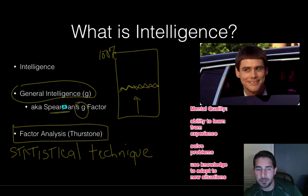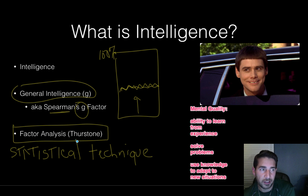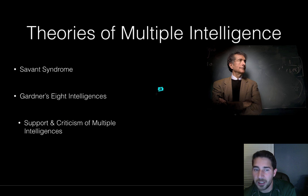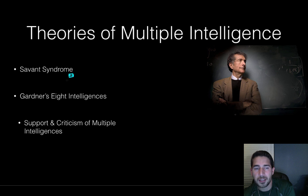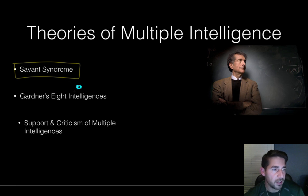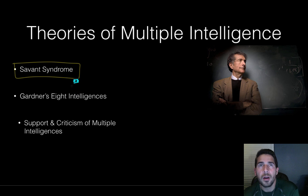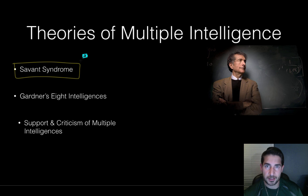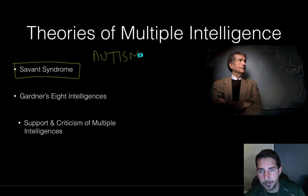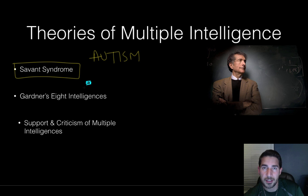There are a few names to keep in mind — Spearman, Thurstone, and Gardner is coming right up. Here's our man Gardner — he's the multiple intelligences guy. A criticism of Spearman is this idea of savant syndrome, where somebody is poor in many areas but really good in another. If you've seen the movie Rain Man, Dustin Hoffman has savant syndrome. A lot of times savant syndrome goes along with autism — you're good at one thing and not so good at another. So Gardner, a psychologist, in the 1980s, was working to expand intelligence beyond just academic smarts.